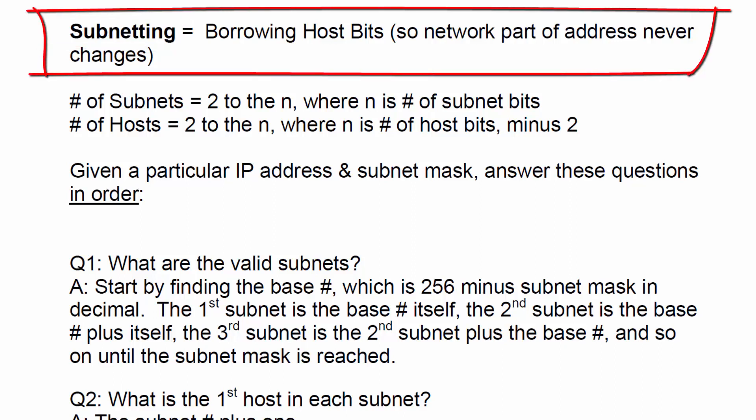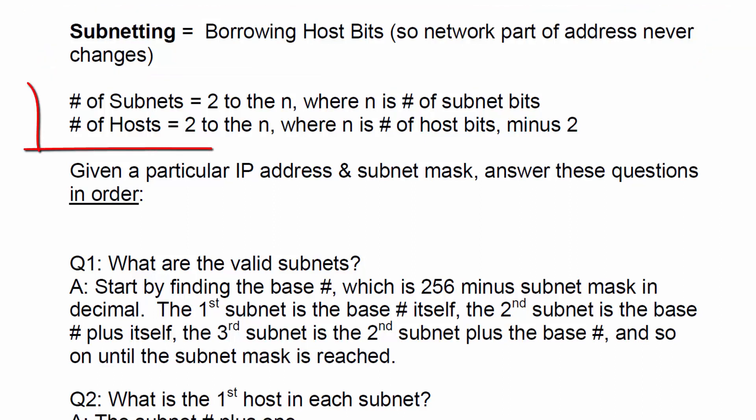Subnetting is borrowing host bits, so the network part of the address never changes. Two of the main things that you need to understand or be able to answer is how many subnets are there and how many hosts are there if given a specific address and a specific subnet mask. The number of subnets is 2 to the power of n, where n is the number of subnet bits. The number of hosts is 2 to the power of n, where n is the number of host bits minus 2.